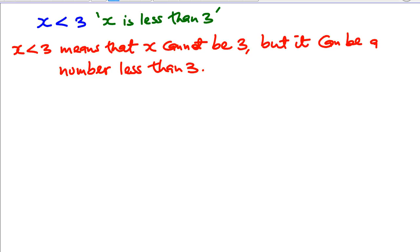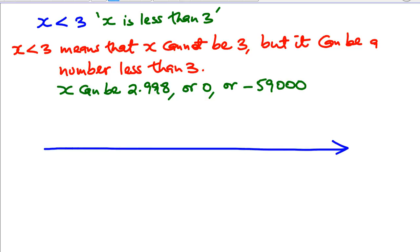We can represent this information on a number line. Remember, when we say that X is less than 3, it means X can be 2.998, or it can be 0, or it can be negative 59,000. There are lots of values that meet this condition. How can we represent this solution on a number line?